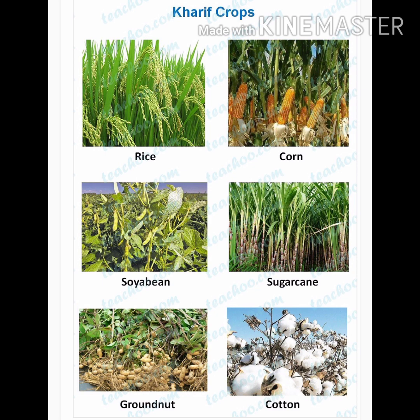Sugarcane is a tropical as well as subtropical crop. It grows well in the hot and humid climate of Uttar Pradesh, Karnataka, and Maharashtra. Cotton is the most important fiber crop. It grows well in the drier parts of the Deccan Plateau, and black soil is ideal for the growth of cotton.